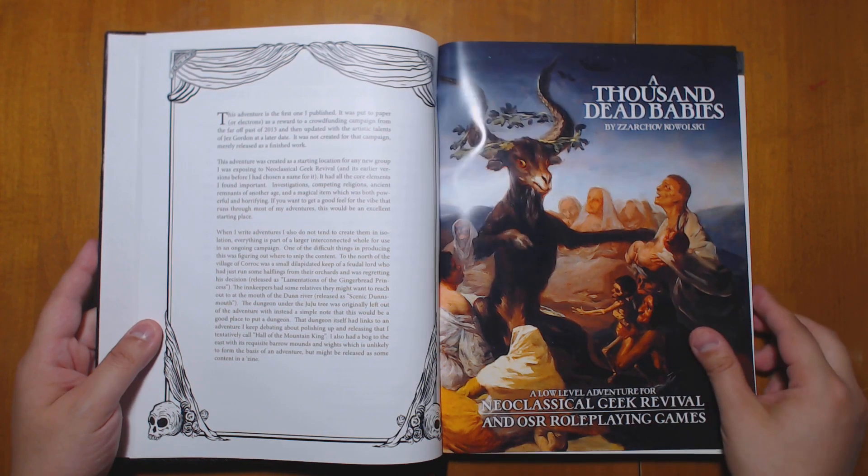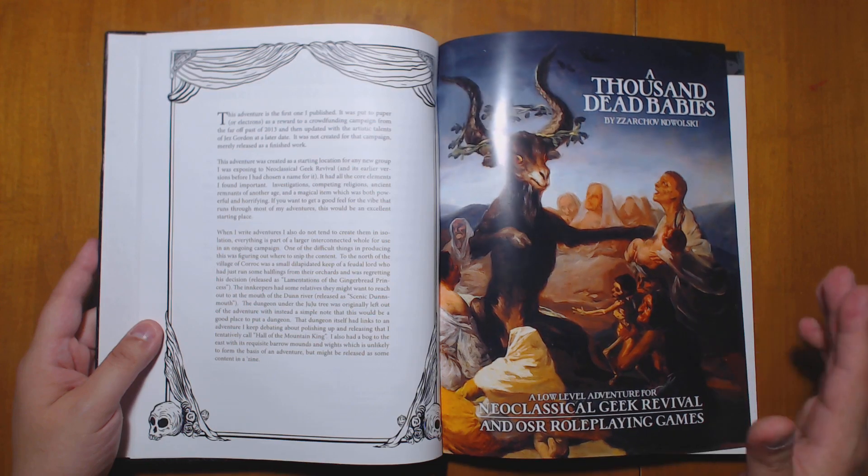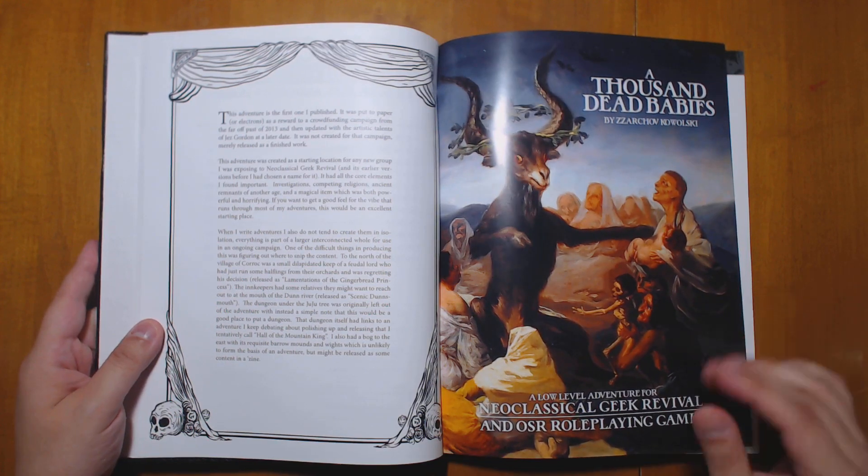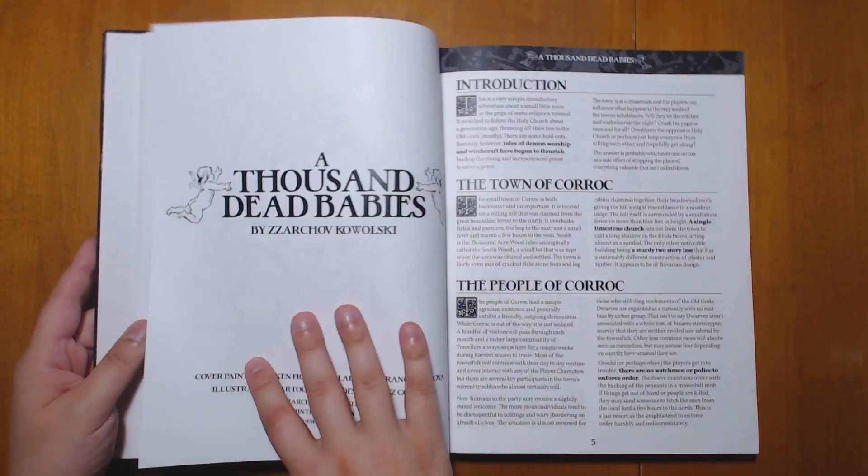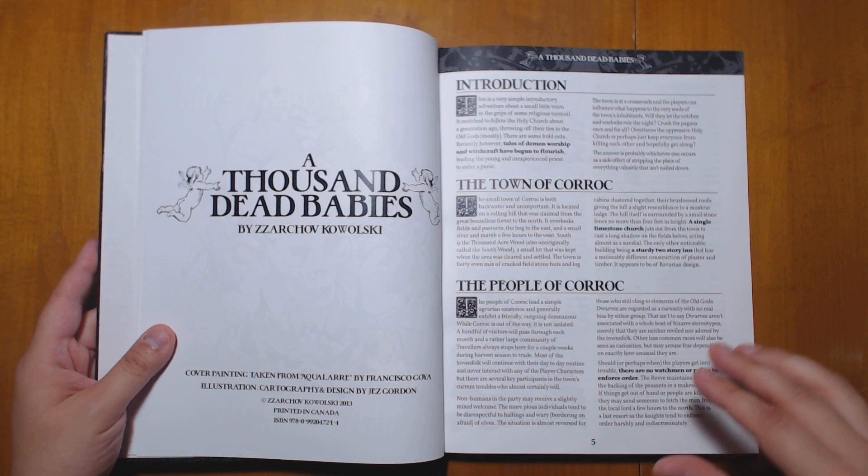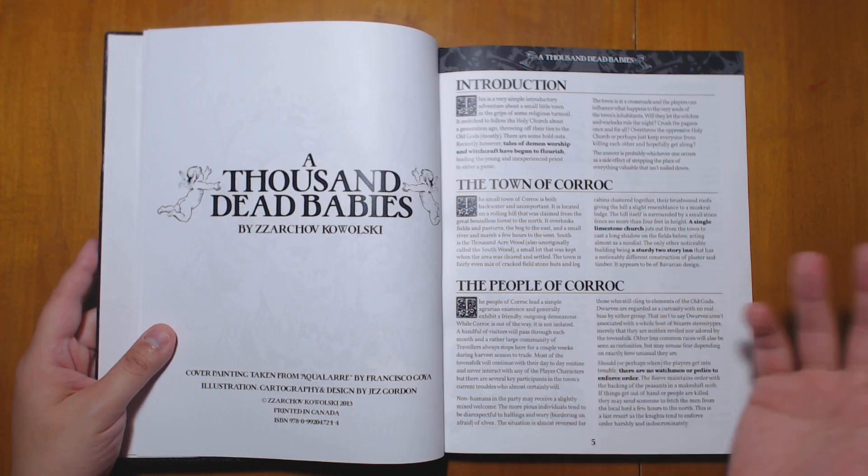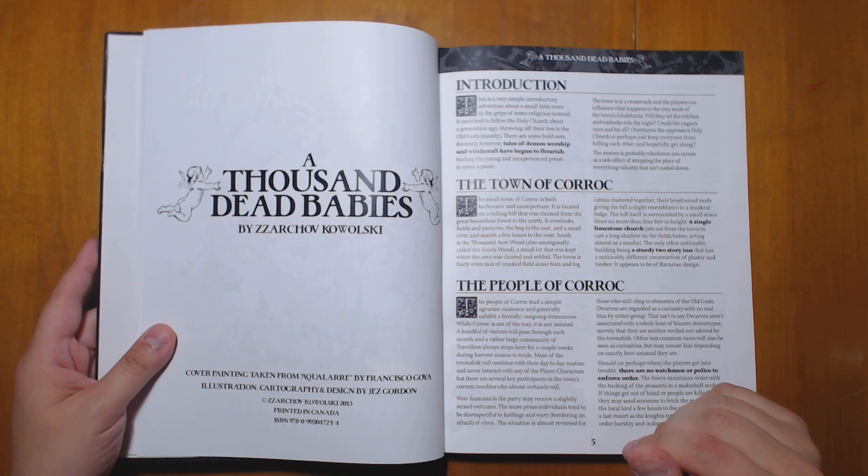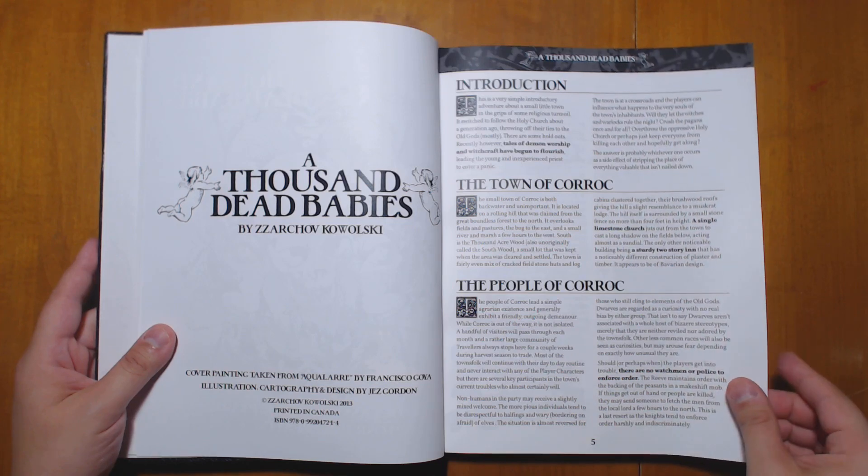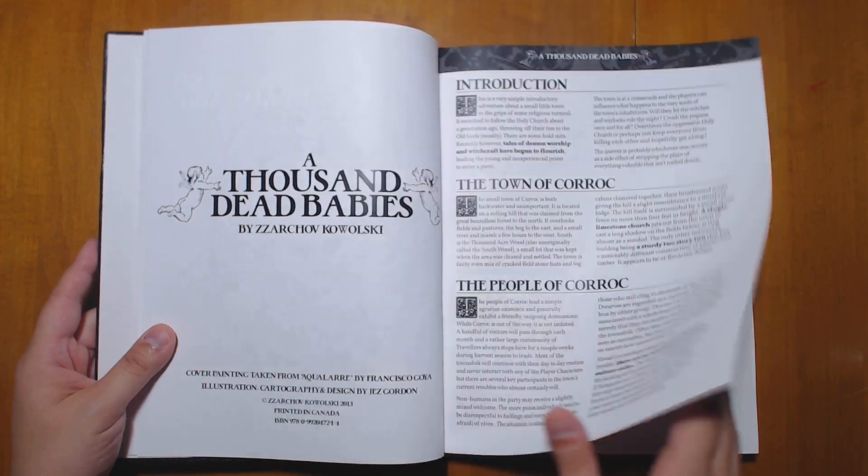So let's get into the first one. A Thousand Dead Babies. What a way to start. So this is one of the adventures that I actually read before receiving this book. I forget where I ran into it, but I was really impressed by how well constructed it was, despite its dark material. It does have a wry sense of humor, which is a common theme throughout a lot of Zarkov's material, as I've come to see from reading this.